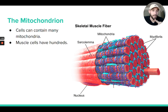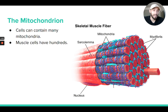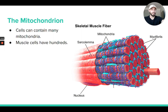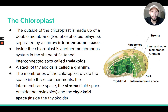It's also important to note that cells usually don't just have one mitochondrion — they have many. Muscle cells, for example, can have hundreds of mitochondria. Cells that require more energy tend to have more mitochondria, and muscle cells require a lot of energy to contract your skeleton and move your body.